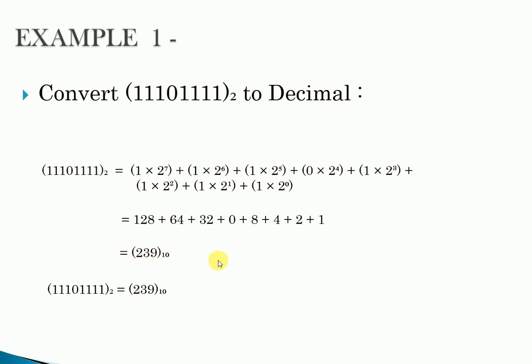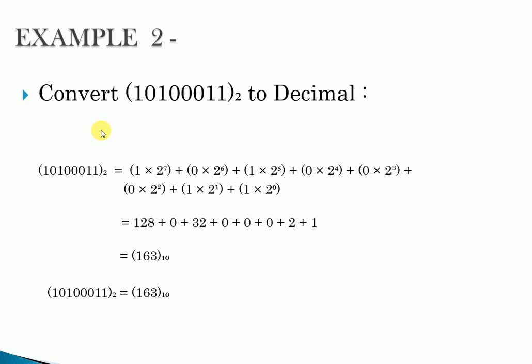We have multiplied by 2 again and given the power from 0 to 7. In the next step, we added all these products and the answer is 163.